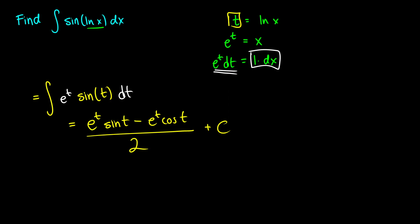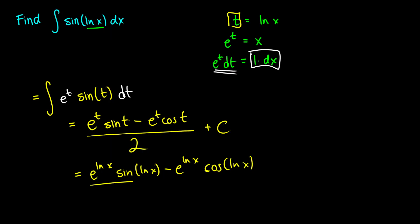We're not done yet because we have to put our substitutions back in. We said ln x equals t, so every time we see t we replace it with ln x. So e to the t becomes e to the ln x, giving us: e to the ln x times sine of ln x minus e to the ln x times cosine of ln x, all over 2 plus a constant. We can simplify further because e to the ln x cancels to just x, so we replace both instances with x to get our final solution.